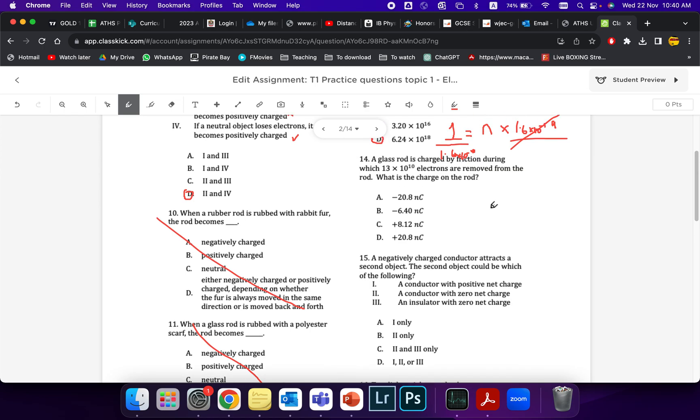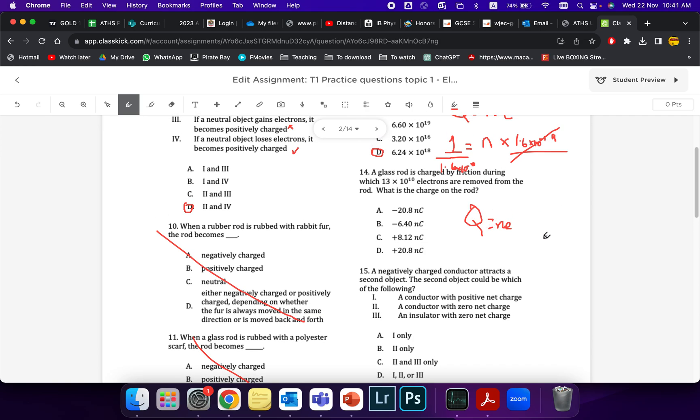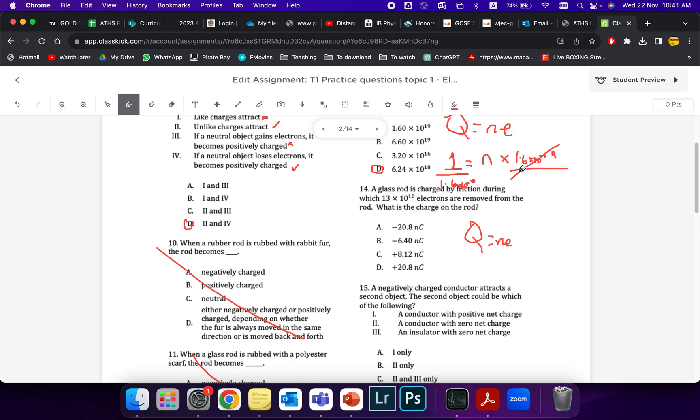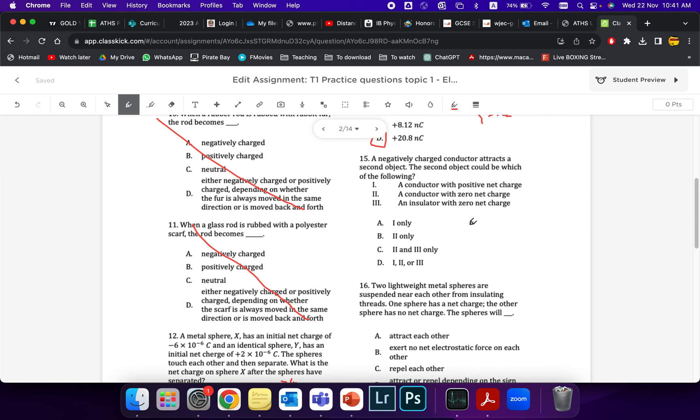Next, a glass rod is charged. And we are removing electrons. Same formula. Q equals N E. Once we've done that, what we're going to do is just find the charge. Number this many electrons, 13 times 10 to the 10, multiplied by 1.6. It will be 20.8. If the electrons are removed, that means it's positive. If they were added, it would be negative.